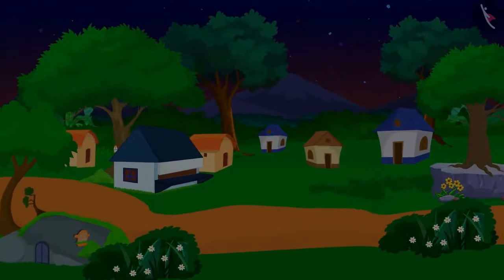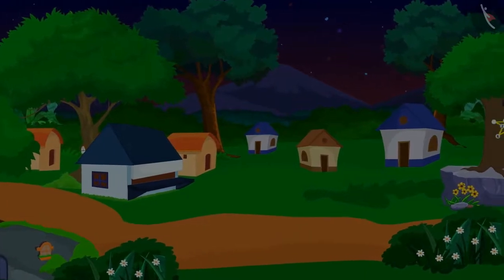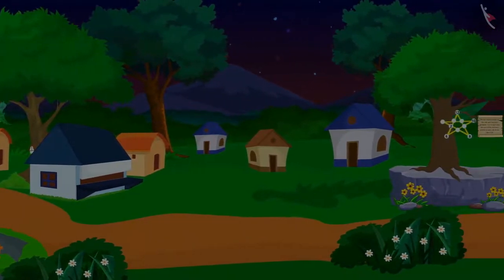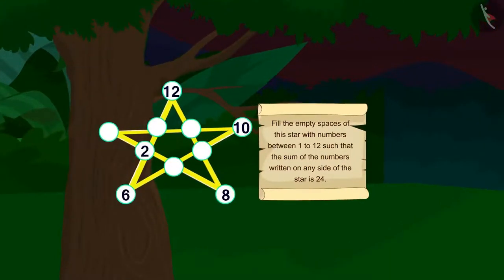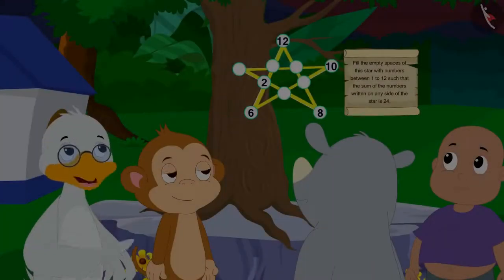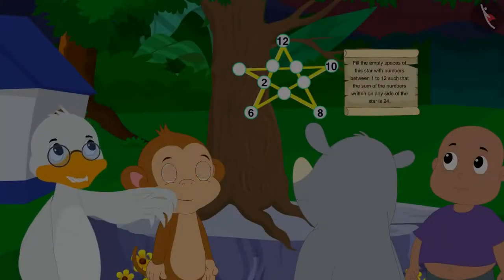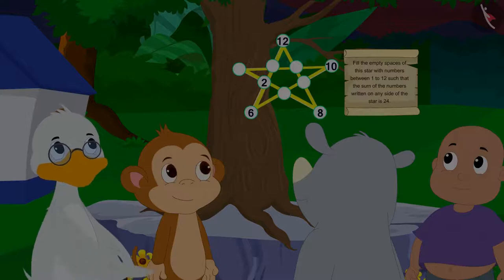It was night and darkness spread throughout the village. Then the villagers saw a star on the banyan tree of the village. There are some numbers written on this star and there are some empty spaces too, said Badbole uncle.